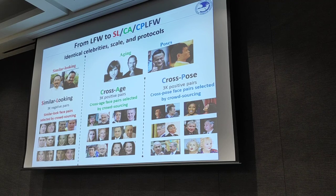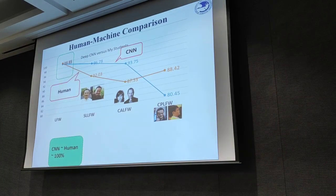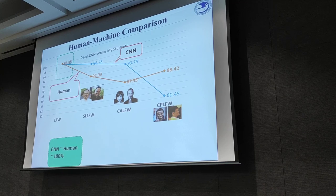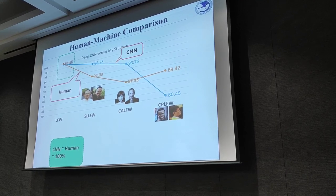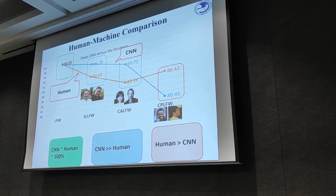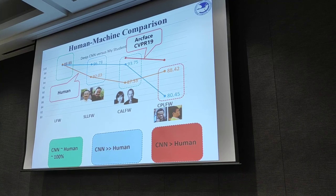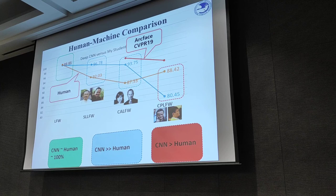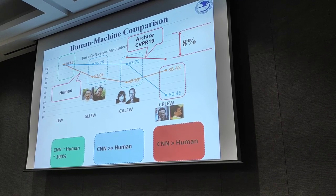Since the scale and protocol are identical to LFW, we named them the similar-looking and cross-pose Labeled Faces in the Wild. When seeing these much more difficult face pairs, the accuracy of both humans and deep CNNs dropped significantly. Two years ago, in the case of cross-pose verification, CNN performance was still worse than humans. This year's CVPR paper — a method called ArcFace — has boosted accuracy to 92%, surpassing humans. Fortunately it is still difficult enough that we have about 8% room to publish new methods.